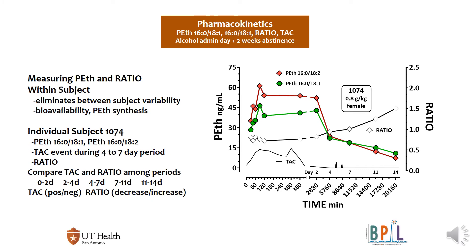The diamonds during the alcohol administration day go down consistent with alcohol consumption, and then during the 14-day abstinence period steadily go up. However, we saw a TAC drinking event — two of them — between days four and seven. When comparing that to changes in the ratio, the tracing between days four and seven appears more shallow, consistent with consumption, compared to the slopes between days two and four, seven to eleven, and eleven to fourteen, which are more likely to represent abstinent periods.